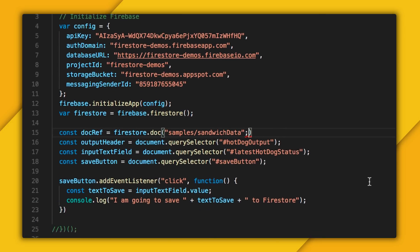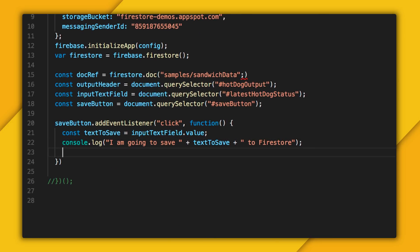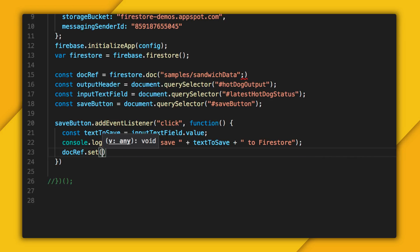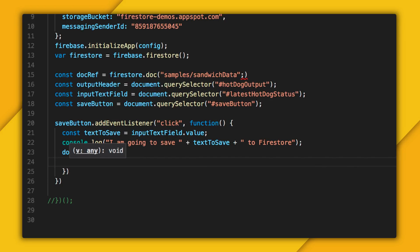So now that I've specified my document, let's go back to my event listener, where I'm going to call set on this document reference. Now this will take in a JavaScript object to represent the data that we want to save for this document. So we'll set hotdog status as text to save. And well, that's all I really need. This will replace my current document if it exists, and it will create it if it doesn't. It also conveniently creates the samples collection too, so I don't need to worry about whether or not that exists. Now this set function, as with most Firestore functions, returns a promise, which means it's pretty easy to note when this call is complete. So I'll attach a then callback at the end here and print out a little success message.